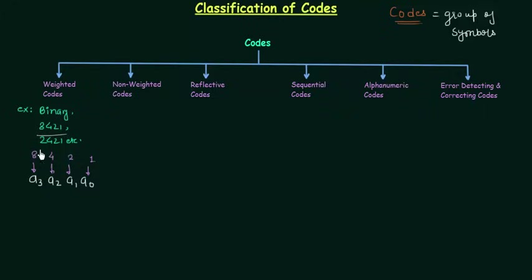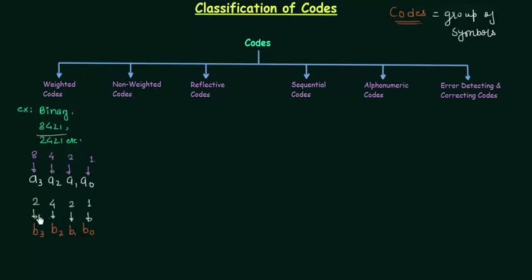That's why we call it the 8421 code — 8, 4, 2, 1 are nothing but the weights of each position. In the same way, for the 2421 code with digits b3, b2, b1, b0, the weights of the positions are 1, 2, 4, and 2 respectively. That's why we call it the 2421 code. We will discuss 8421 and 2421 codes in greater detail in coming presentations.